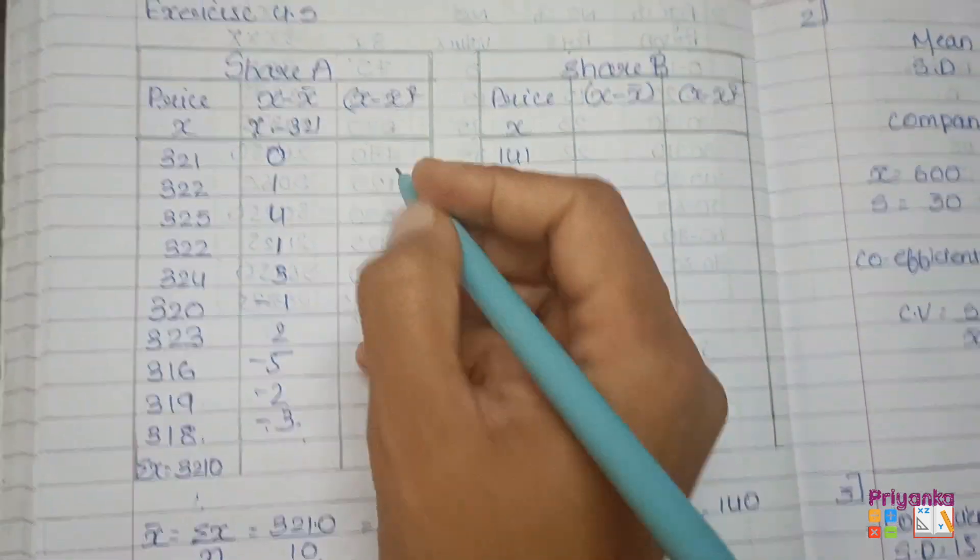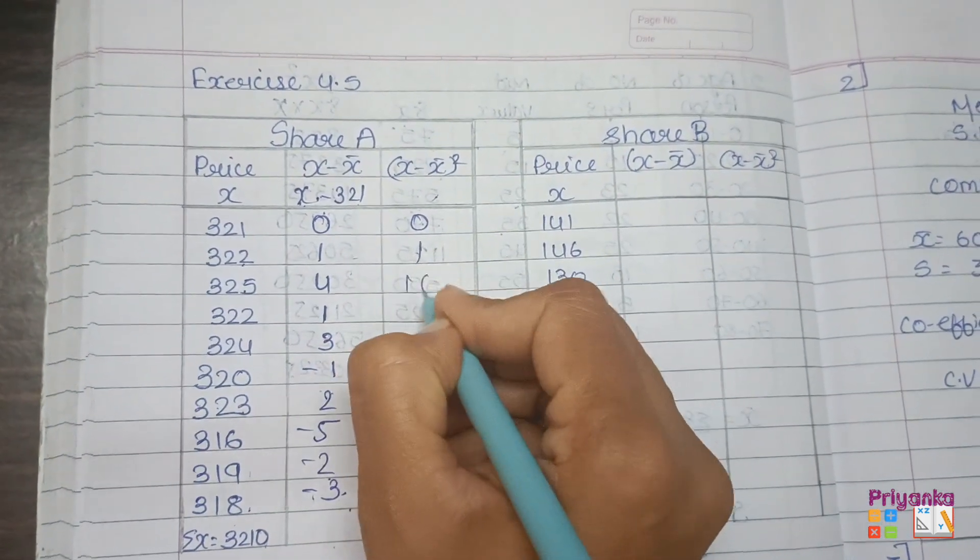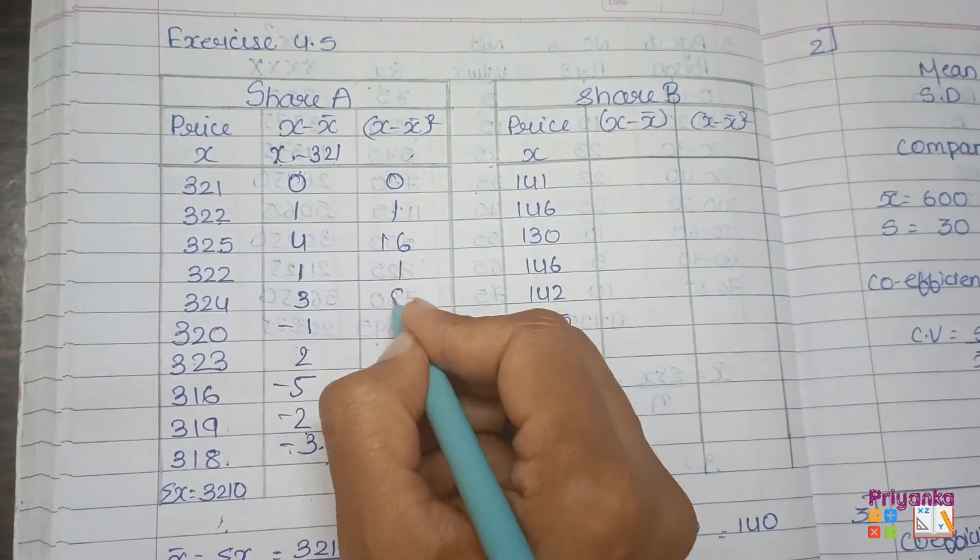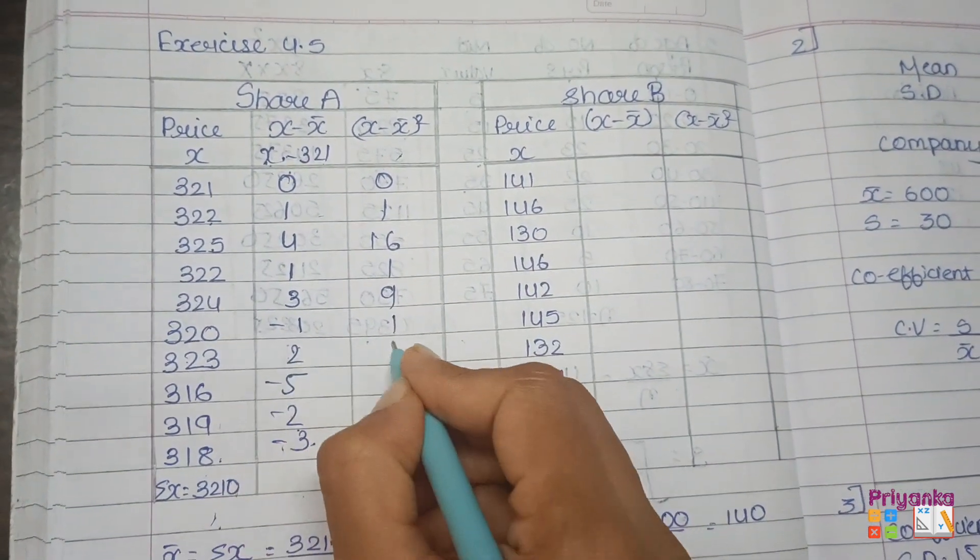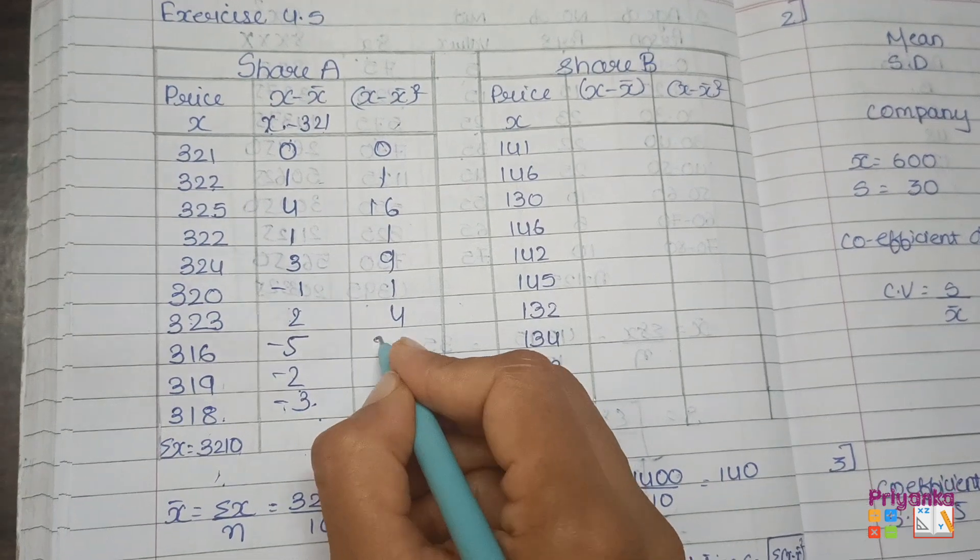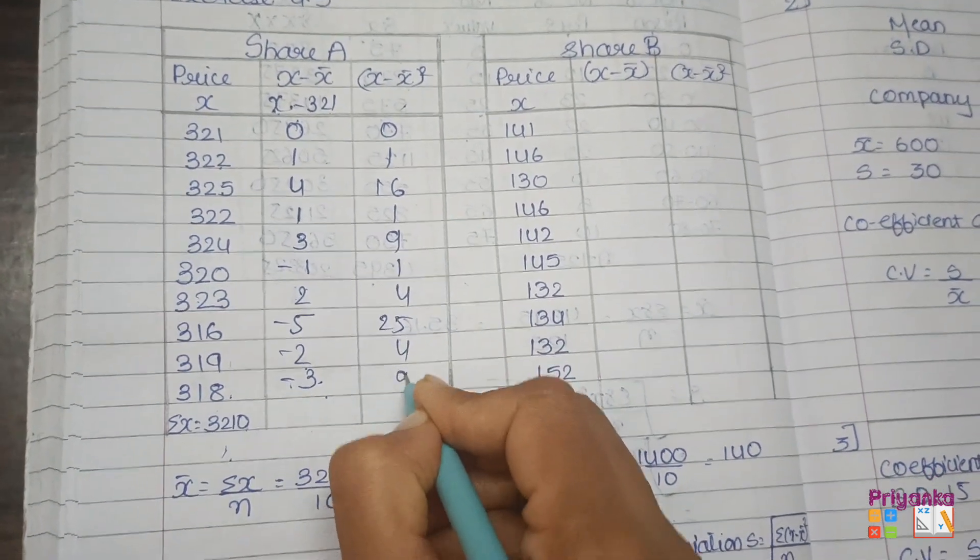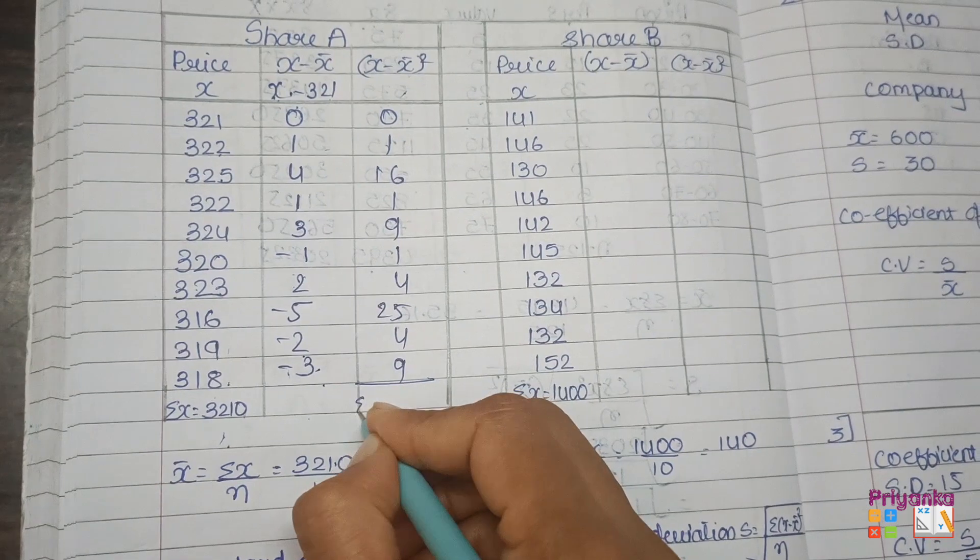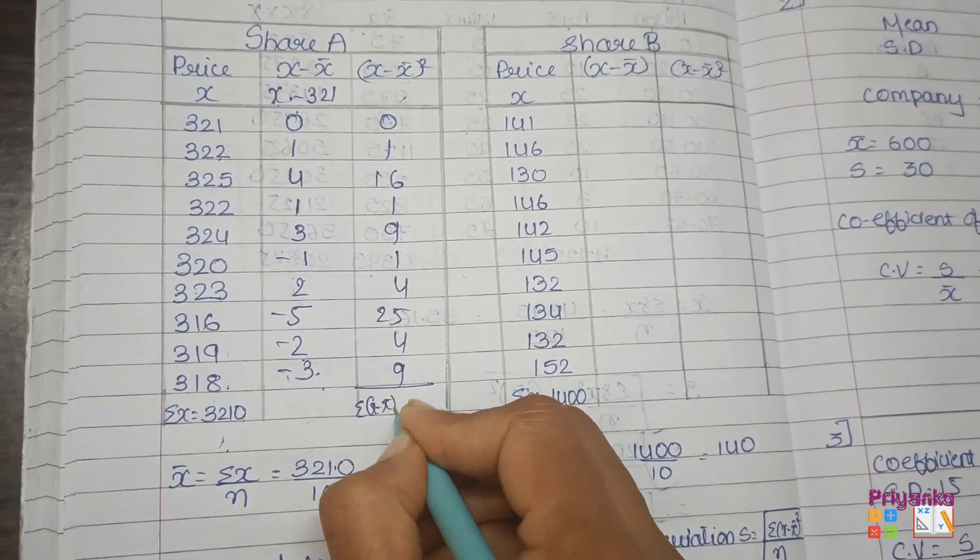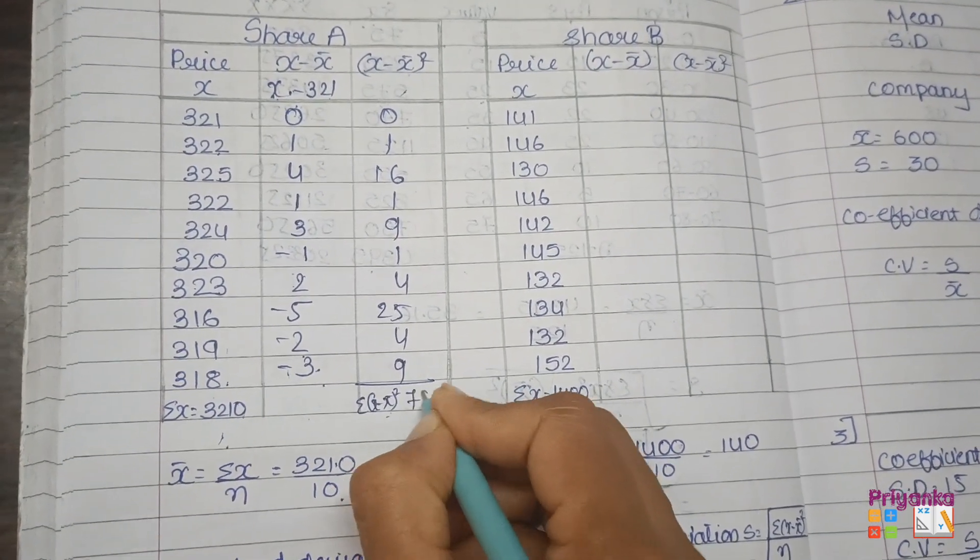Now x minus x bar whole square. The square of this column: 0 squared is 0, 1 squared is 1, 4 squared is 16, and so on with values 1, 9, 1, 4, 25, 4, 9. Now get the total of this column, that would be our x minus x bar whole square, that is 70.